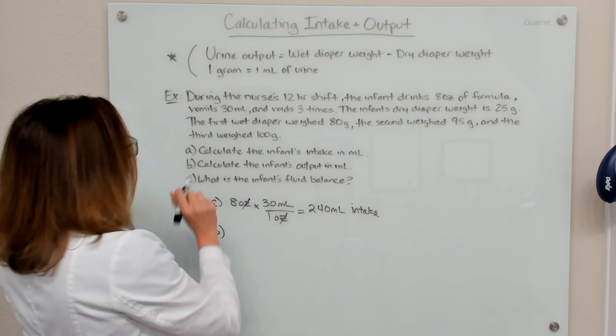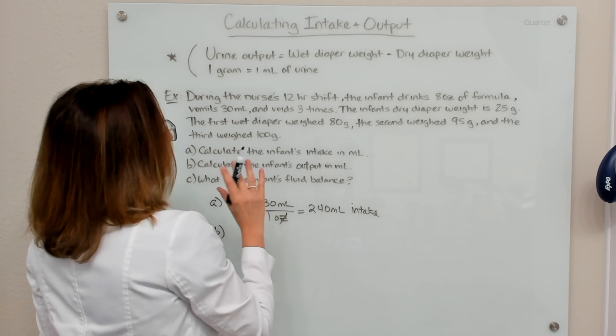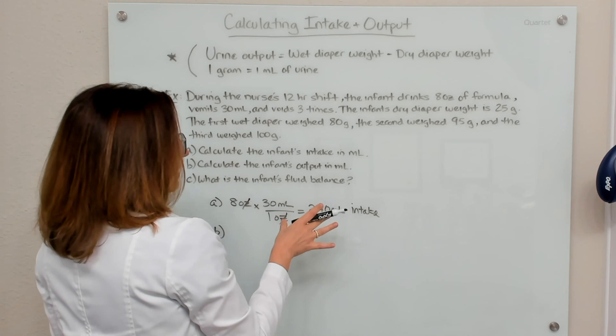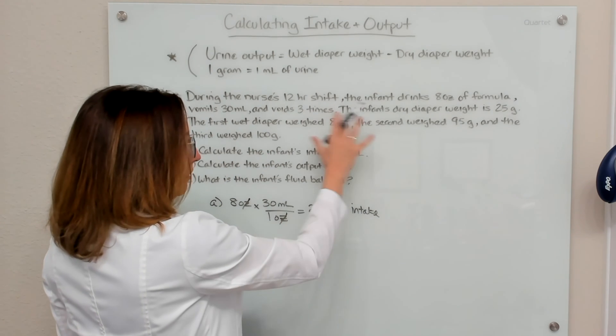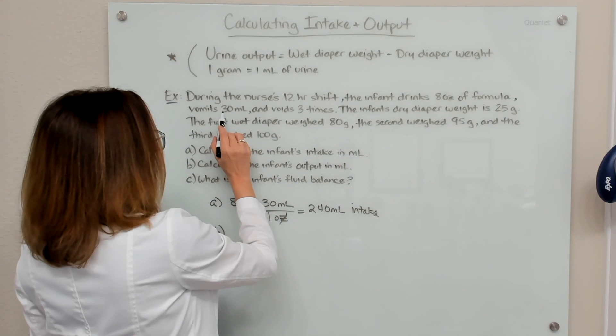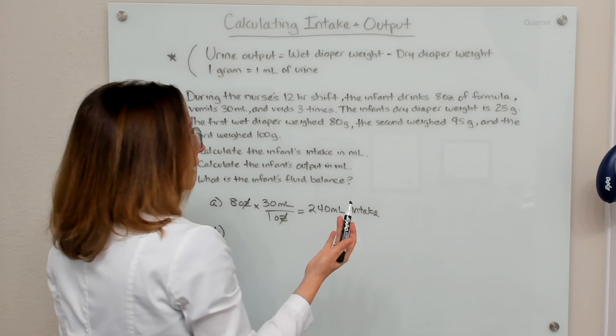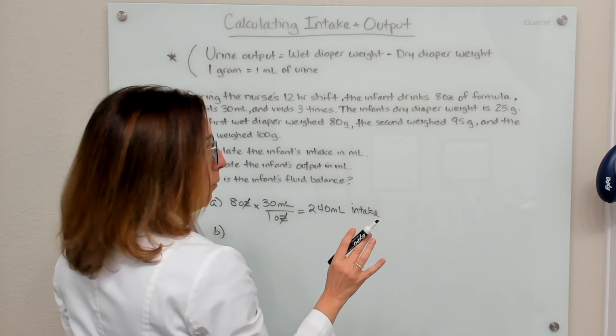So part B asks us to calculate the infant's output in milliliters. For the infant's output, we have three wet diapers we need to figure out, and then we need to make sure we are counting the emesis of 30 ml.